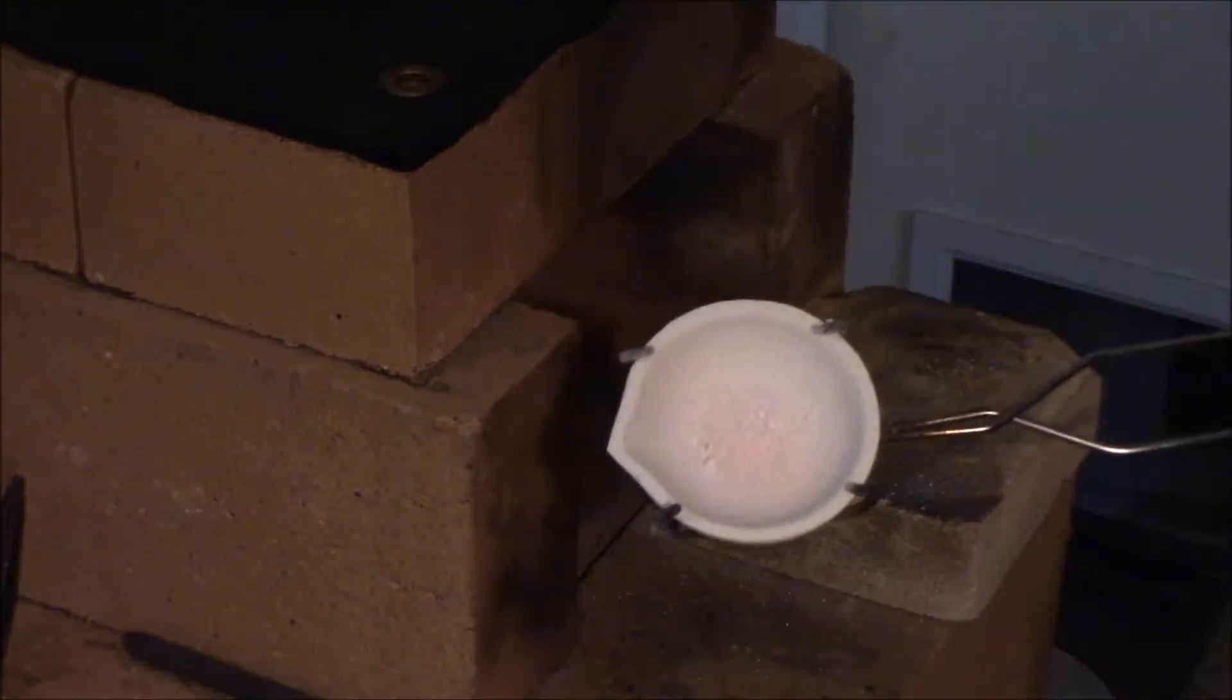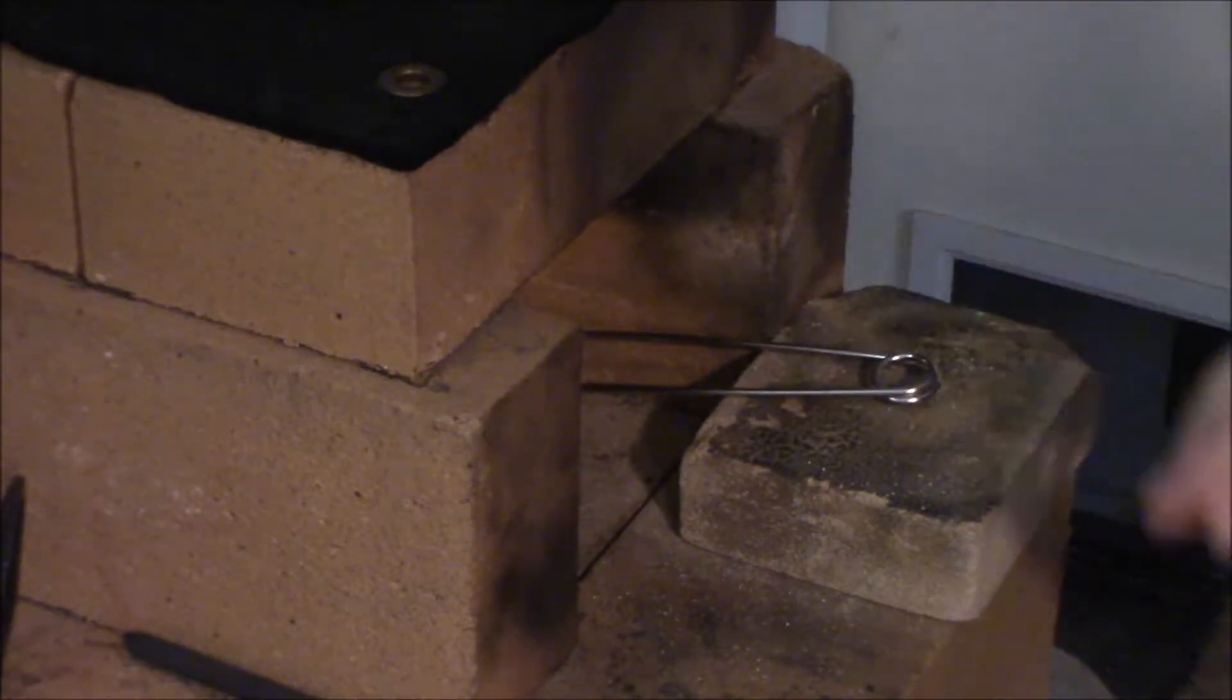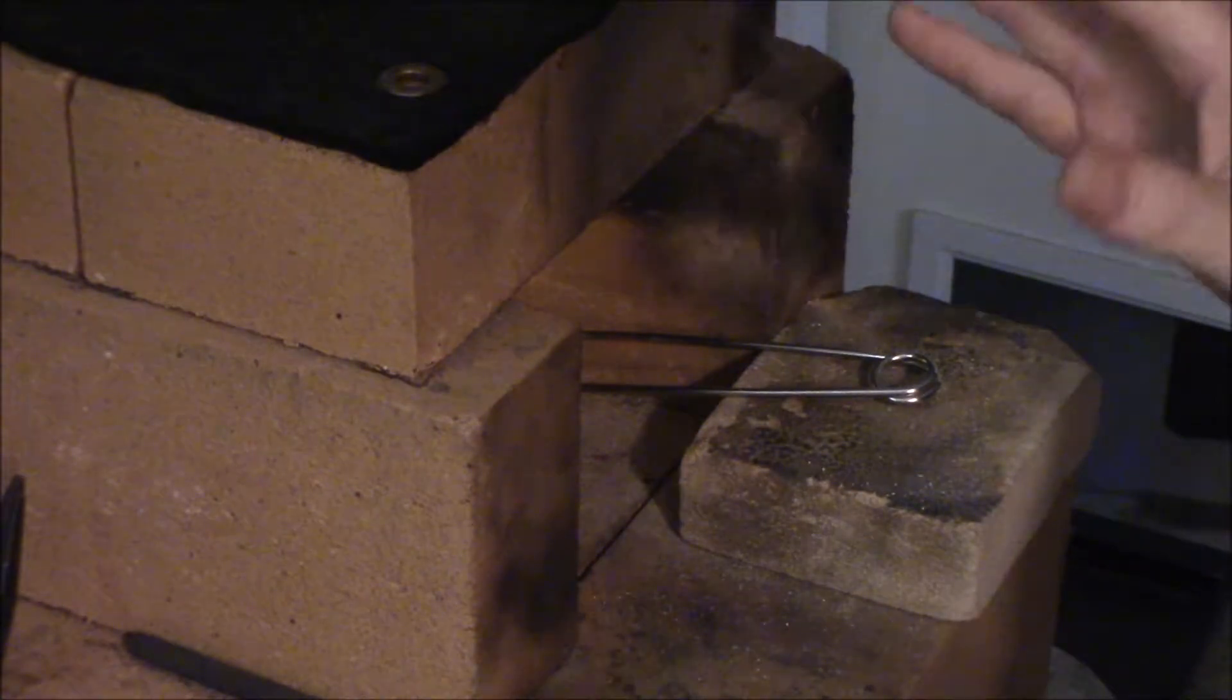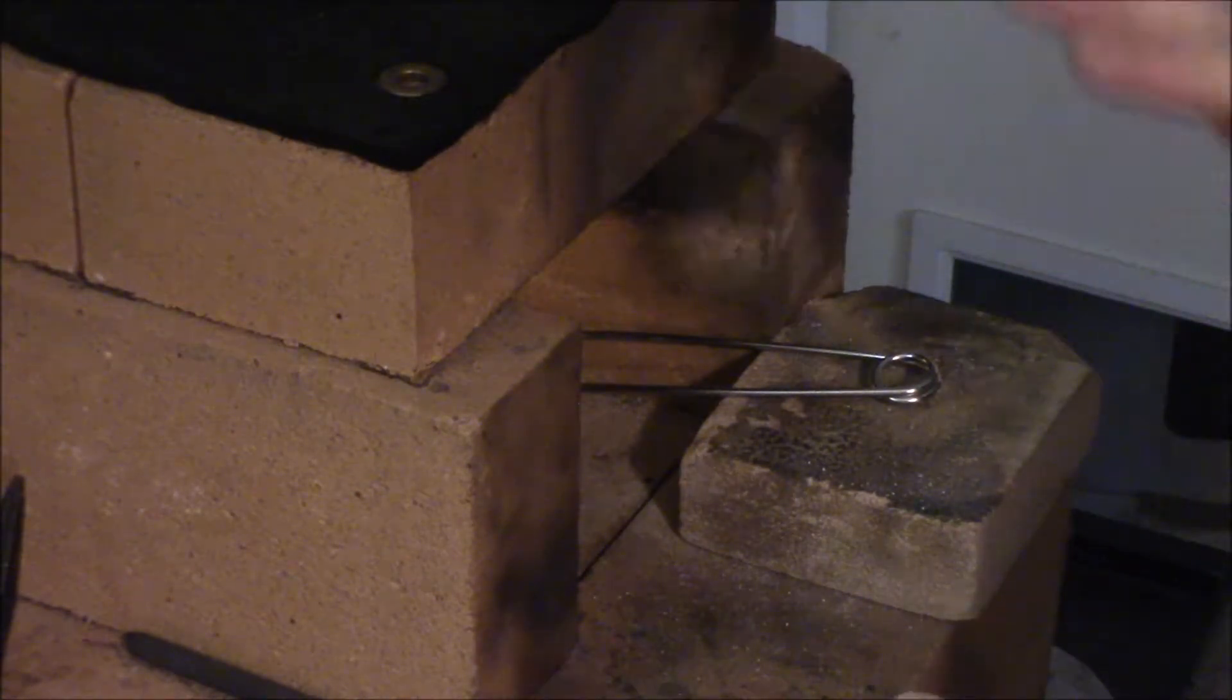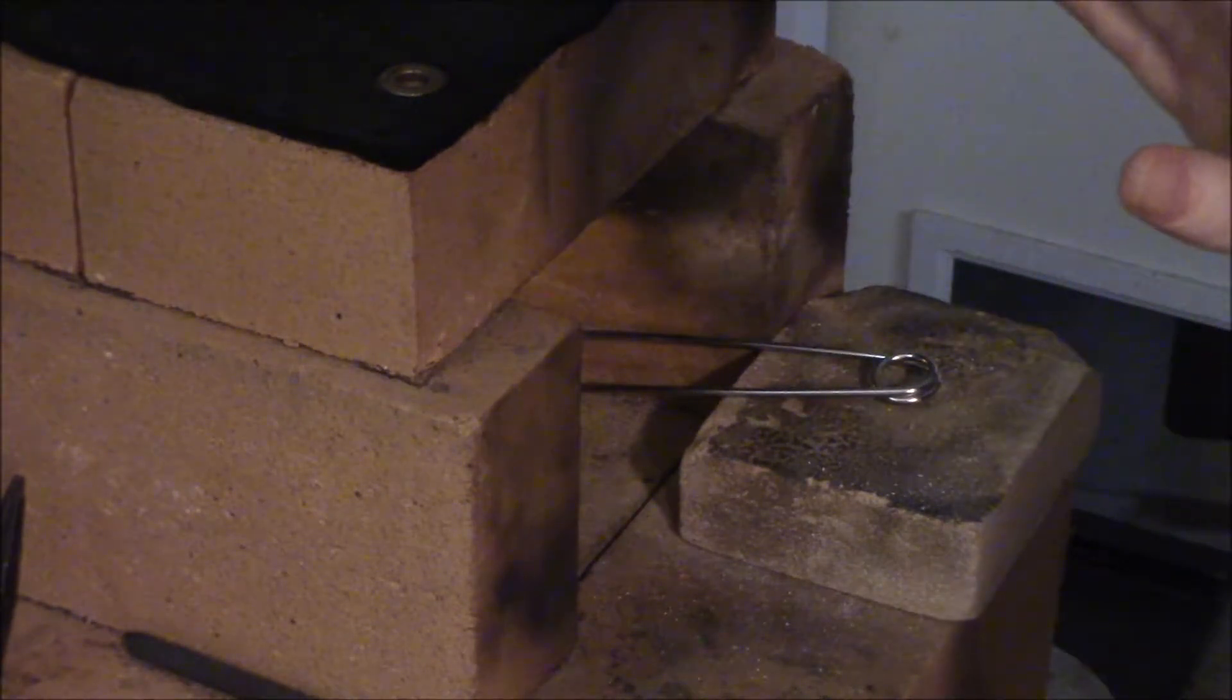You sprinkle some on about like that, pop it back in, and I'll let that cook for just a few minutes so that glaze gets nice and hot, melts off the flux, and it'll start filling in. I'll repeat this process several times on the bottom until I get it to where I think it's glazed well.